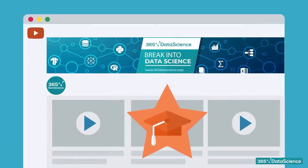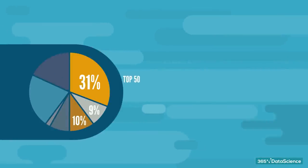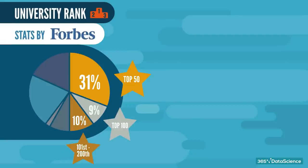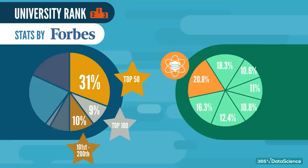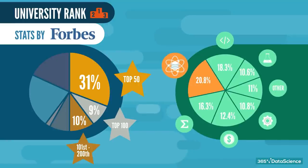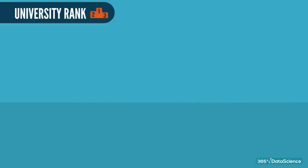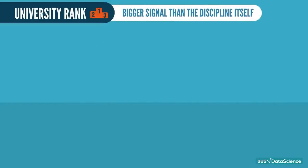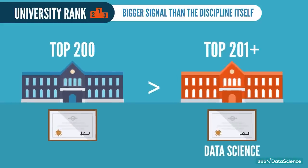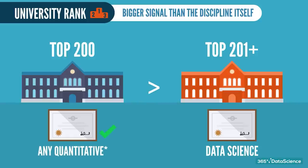In one of our other YouTube specials, we mentioned that roughly 50% of all data scientists graduated from some of the 200 top-ranked universities, according to Forbes. Still, a very large portion of those do not offer neither graduate nor undergraduate programs in the field. Add to that the fact that 20.8% of all current data scientists possess a degree in the field, and we come to the conclusion that university rank is a bigger signal than the discipline itself. Therefore, you might be better off earning a different degree from an elite school than a data science one from a less prestigious institution.